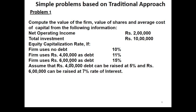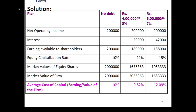Under these three cases, we need to find the overall value of the firm and overall cost of capital. In the solution, we categorize: Case 1 — no debt, Case 2 — 4 lakhs debt at 5%, Case 3 — 6 lakhs debt at 7%. First, we take net operating income — in all three cases it is 2 lakh rupees, the same. For interest: in Case 1 there is no debt, so there is no interest. In Case 2, interest is 4 lakh rupees at 5%, giving 20,000. In Case 3, interest is 6 lakh rupees at 7%, giving 42,000.